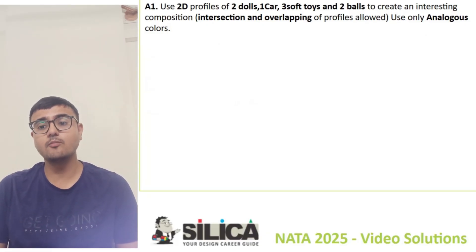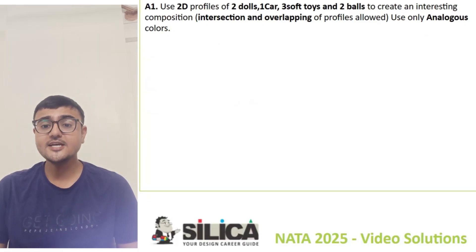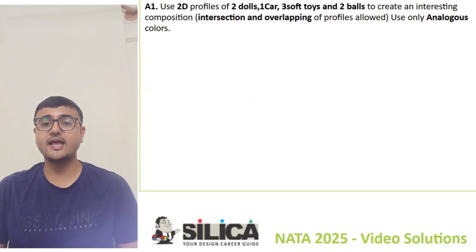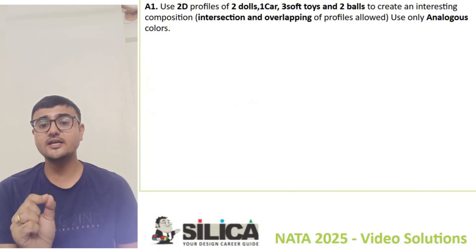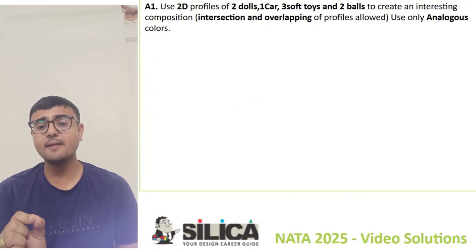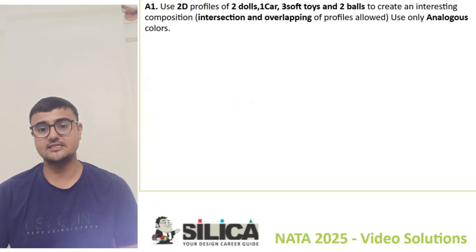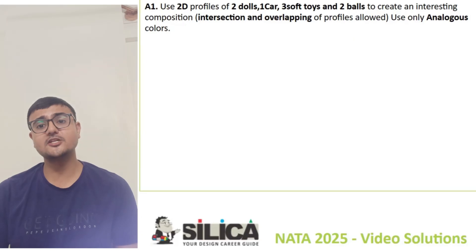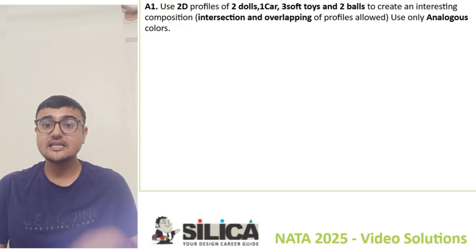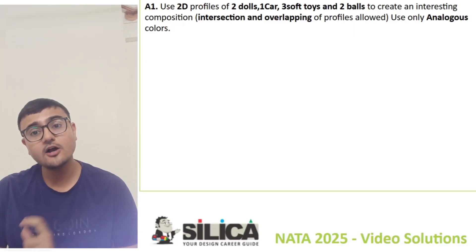The A1 question asks you to use 2D profiles of two dolls, one car, three soft toys, and two balls to create an interesting composition. Intersection and overlapping of profiles is allowed. The total number of shapes is two plus one plus three plus two equals eight. You must use all eight shapes in your composition using only an analogous color scheme.